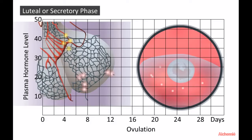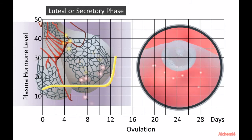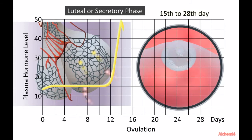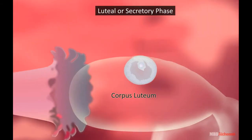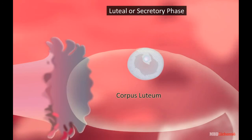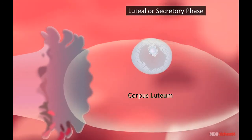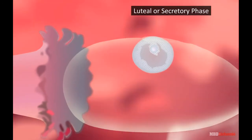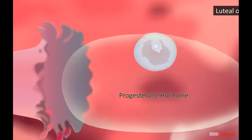Luteal Secretory Phase: It lasts for about 12 to 14 days and extends from the 15th to the 28th day of the menstrual cycle. The corpus luteum, formed from the empty Graafian follicle, increases in size, which is why it is called the luteal phase. The corpus luteum secretes progesterone hormone.